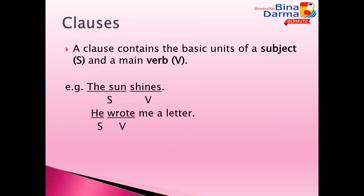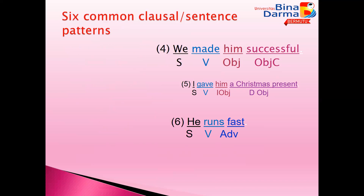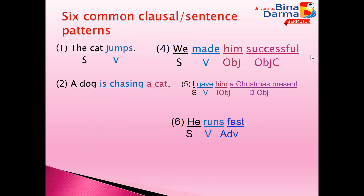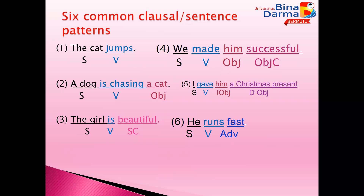A clause consists of basic units: a subject and a verb. There are six common clausal sentence patterns. The first is Subject + Verb. The second is Subject + Verb + Object. The third is Subject + Verb + Object + Object Complement (adjective). The fifth is Subject + Verb + Indirect Object + Direct Object. And the sixth is Subject + Verb + Adverb.